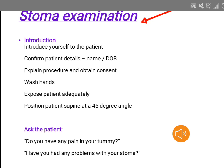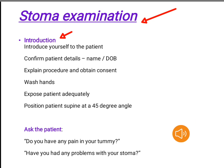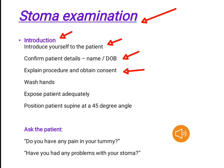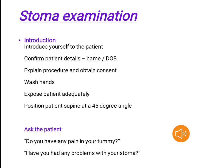Stoma examination — Introduction. Introduce yourself to the patient. Confirm patient details: name and date of birth. Explain the procedure and obtain consent. Wash hands. Expose the patient adequately. Position the patient supine at a 45-degree angle. Ask the patient: do you have any pain in your tummy? Have you had any problems with your stoma?